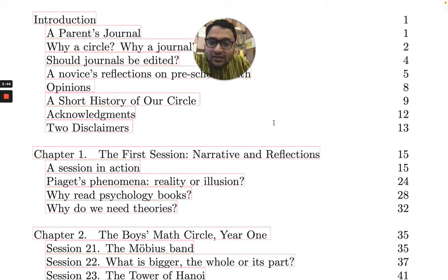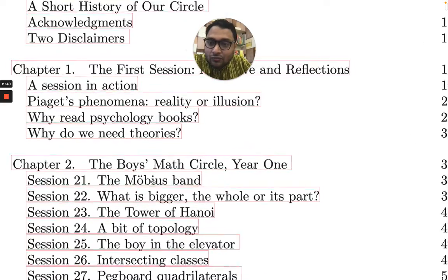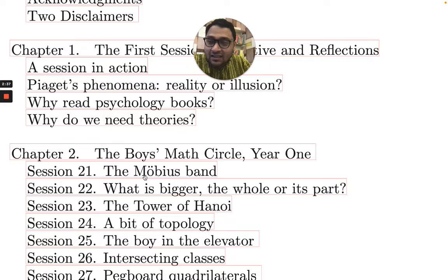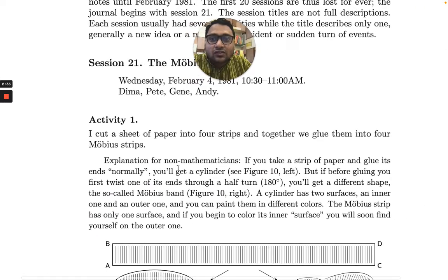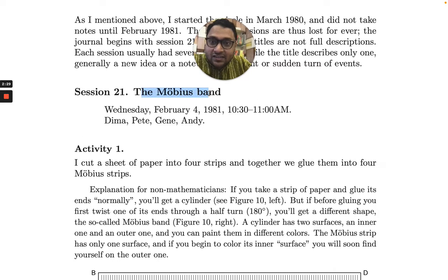So what kind of stuff can you expect? For example, there is this thing on Mobius band. It starts with session 21 because up to 20, the person did not record. So look at the stuff on session 21 on Mobius band.